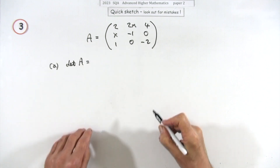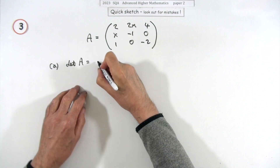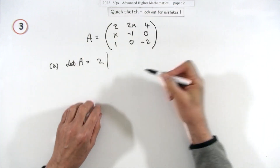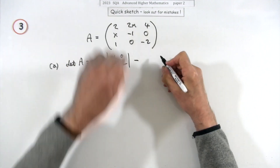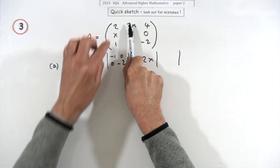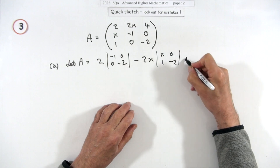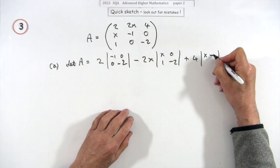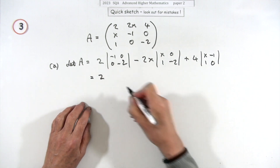You can expand along any line, but using the top row: you'd have 2 multiplying its minor — the determinant of the 2×2 matrix with entries negative one, zero, zero, negative two — minus 2x multiplying its minor, the determinant of the remaining 2×2 matrix with entries x, zero, one, negative two — plus 4 times its minor, the determinant of the matrix with entries x, negative one, one, zero.